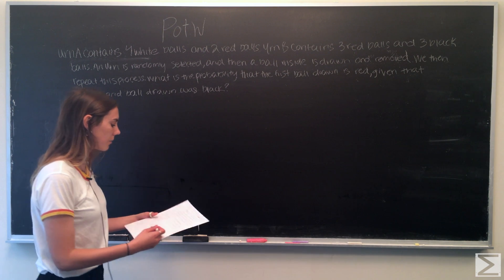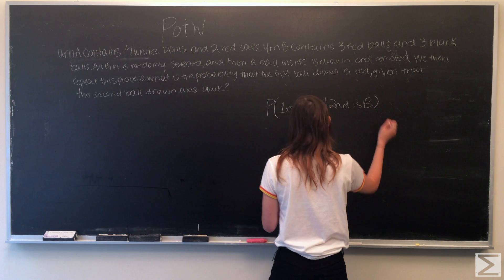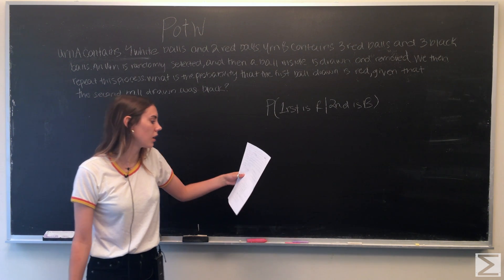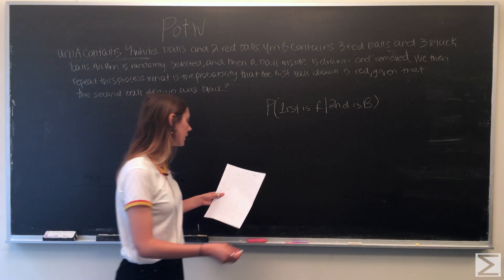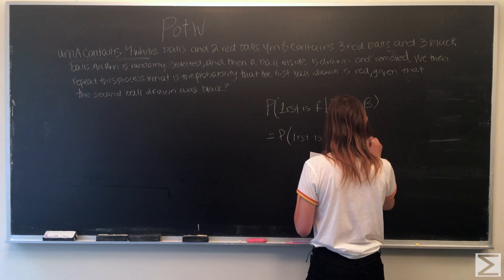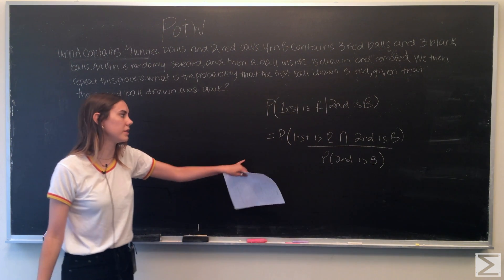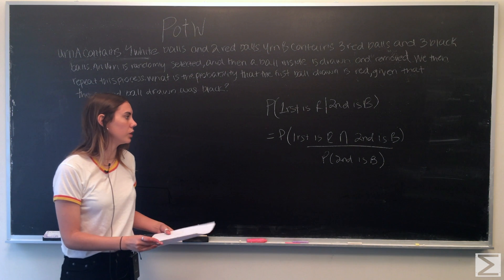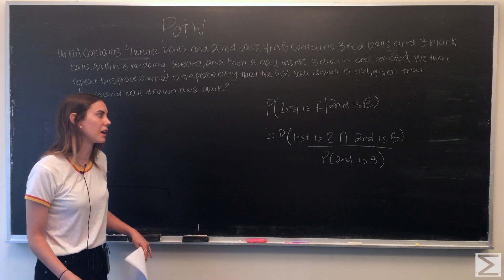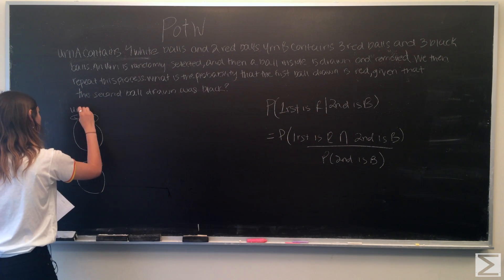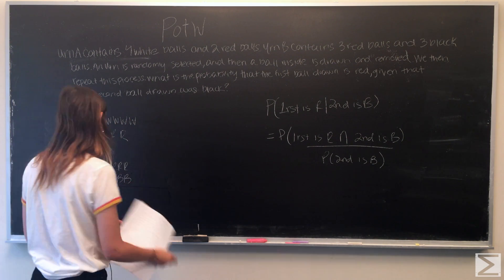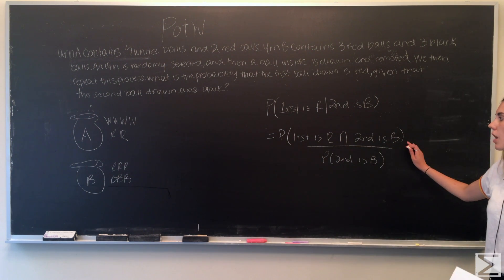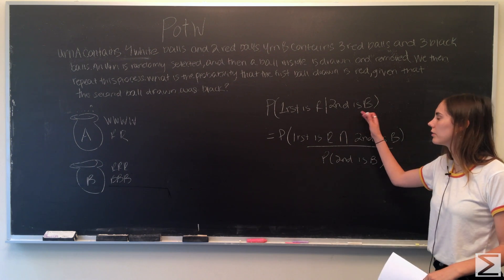This is a conditional probability problem, which means it can be written as: the probability that the first ball is red given that the second ball is black. By the definition of conditional probability, this equals the probability that the first ball is red intersected with the second ball being black, over the probability that the second ball is black. We'll draw out the urns to help visualize this, then solve for the two probabilities and put them into a fraction.